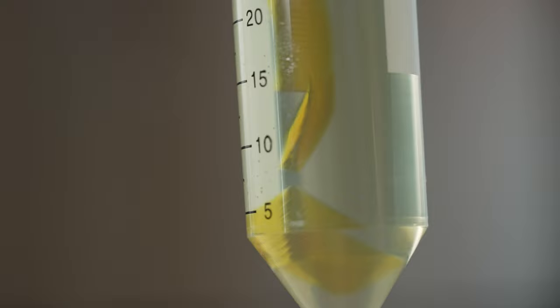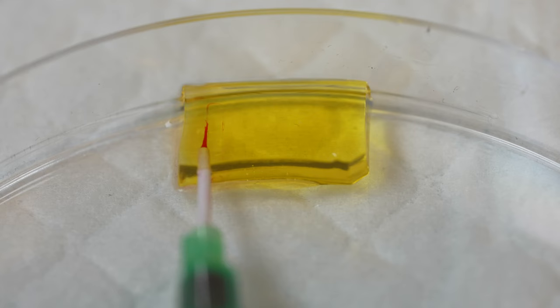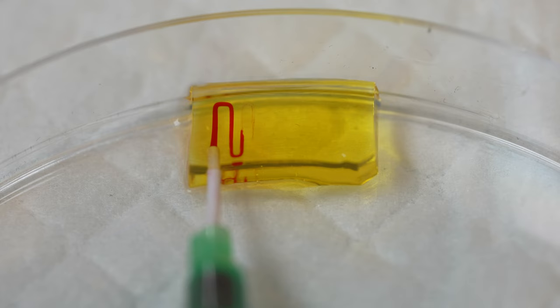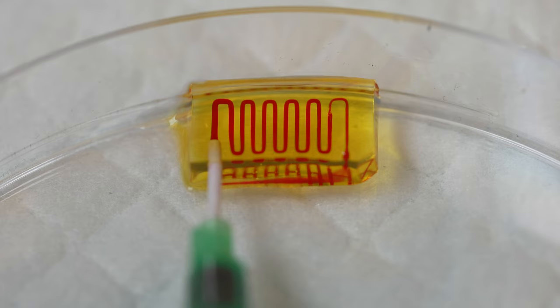When you 3D print them, they have the consistency somewhere between jello and a gummy bear. They're soft and squishy, but they also hold their shape. So we can print them with different channels inside, for example.